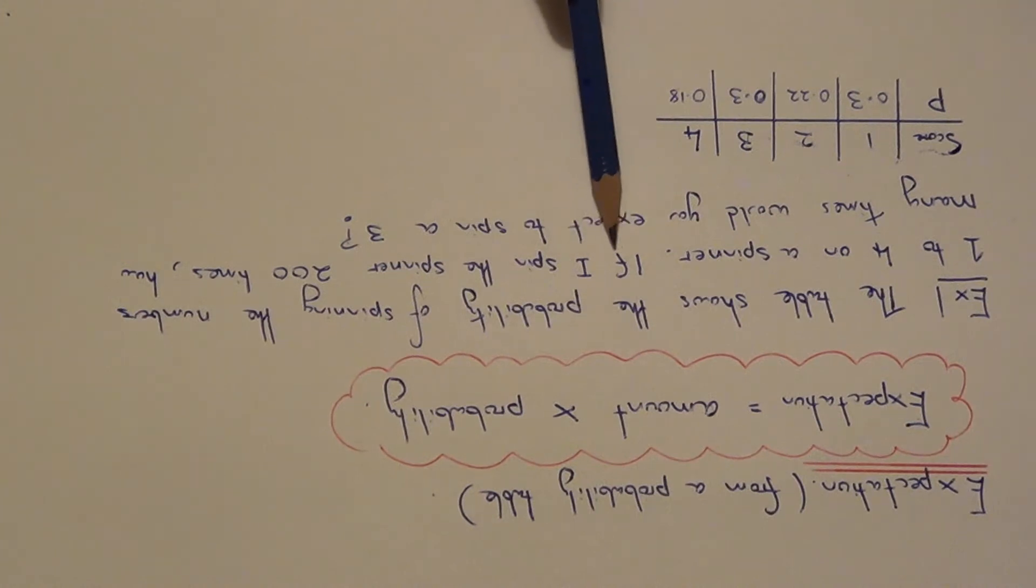What the question asks us to do is, if we spin the spinner 200 times, how many times should we expect to spin a 3?